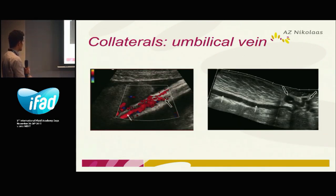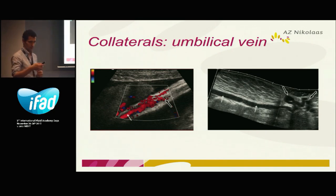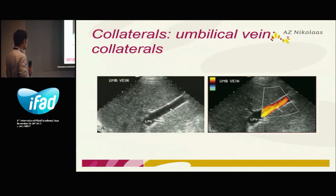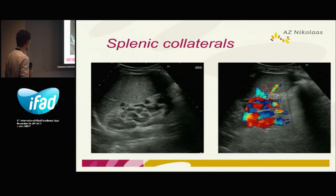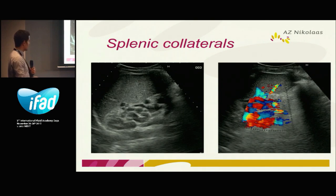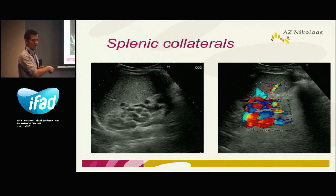Sometimes it gets even larger — this is the caput medusae that we know from physical examination, and you can follow it going to the umbilicus. This is severe portal hypertension, running outside the liver to the umbilicus. Sometimes we can appreciate collaterals, especially in patients with hepatic encephalopathy. The spleen is enlarged, and here you see all kinds of veins in the splenic hilum — this is clear portal hypertension with portal-systemic collaterals.